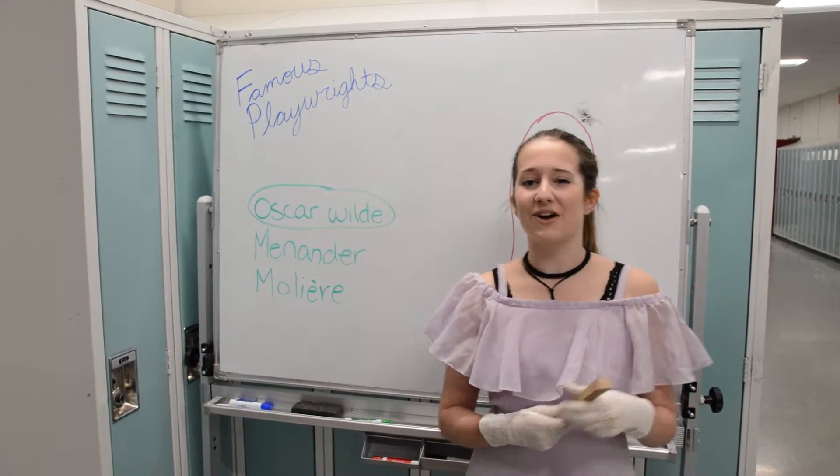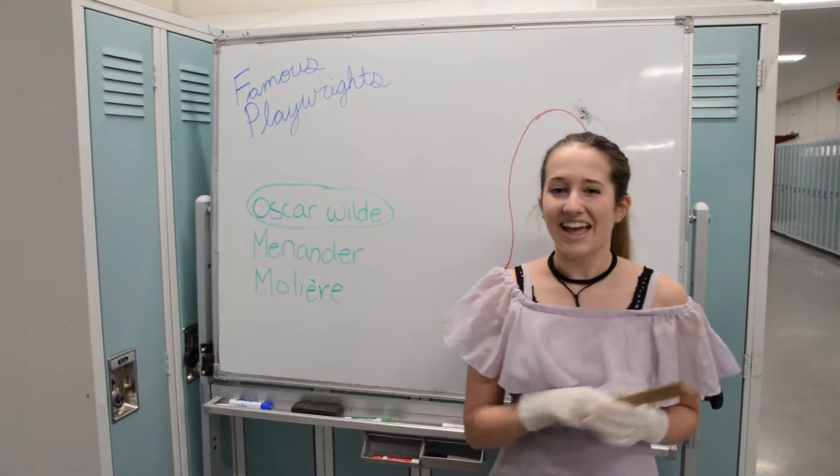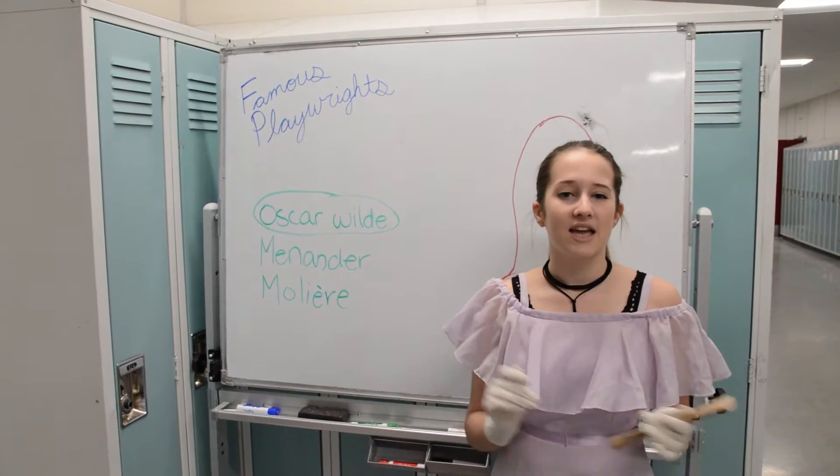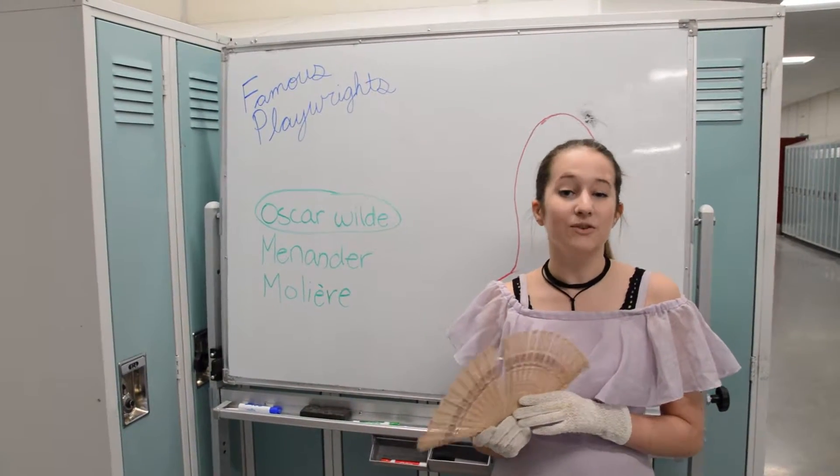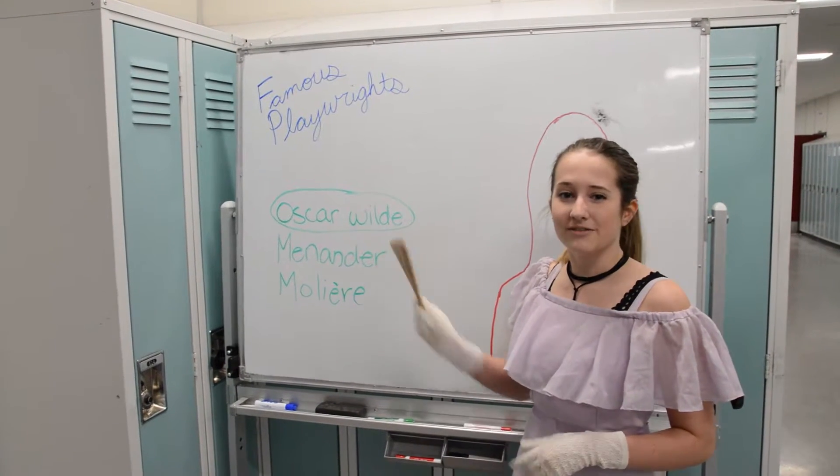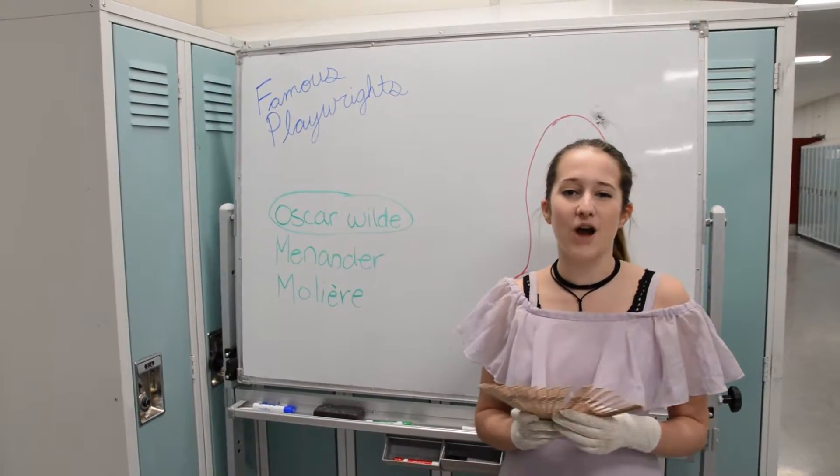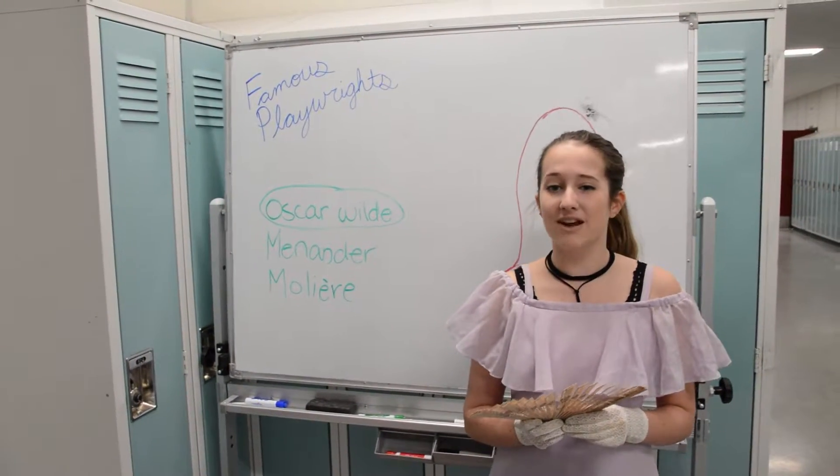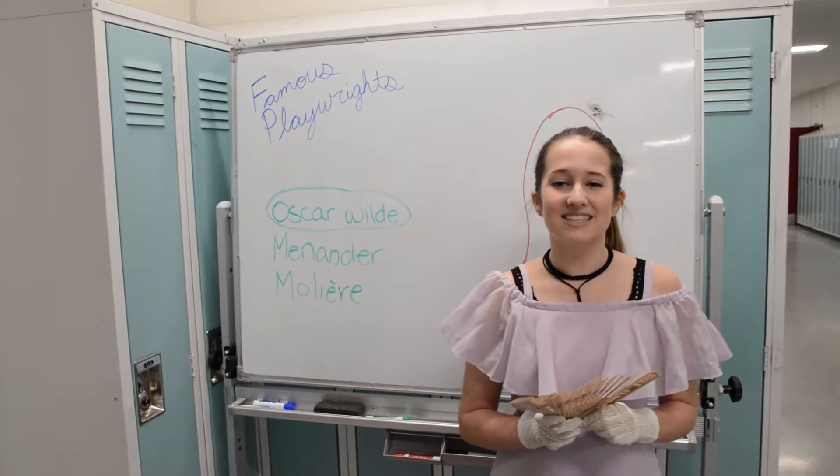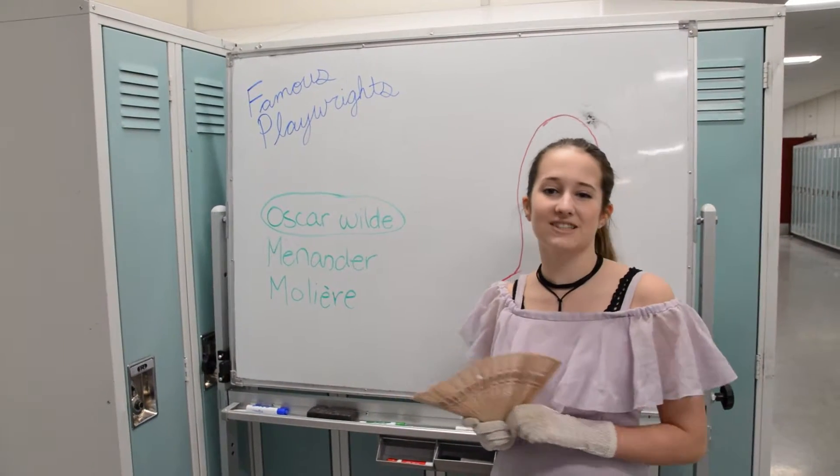A great writer of Comedy of Manners was Oscar Wilde. His most famous play was The Importance of Being Earnest. This style was first developed into new comedy by ancient Greek playwright Menander. His style was often copied by other playwrights, like Roman playwrights Plautus and Terence, because they enjoyed his bold characters and crazy ones.